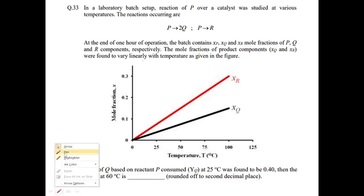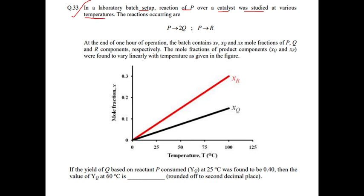Question number 33. In a laboratory batch setup, the reaction of P over a catalyst was studied at various temperatures. The reactions occurring are P gives 2Q and P gives R. At the end of 1 hour of operation, the batch contains xP, xQ, and xR — mole fractions of P, Q, and R components respectively. The mole fractions of product components xQ and xR were found to vary linearly with temperature as given in the figure.